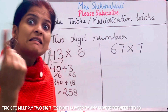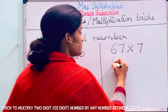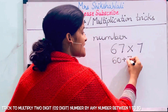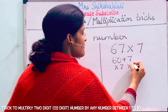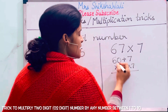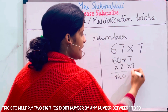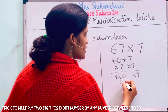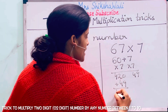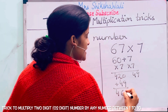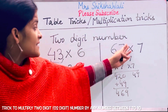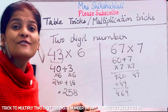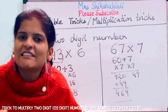For 67 × 7: expand as 60 plus 7. Then 60 × 7 = 420, and 7 × 7 = 49. Add 420 plus 49 = 469. See, this is much easier — you can mentally calculate it.